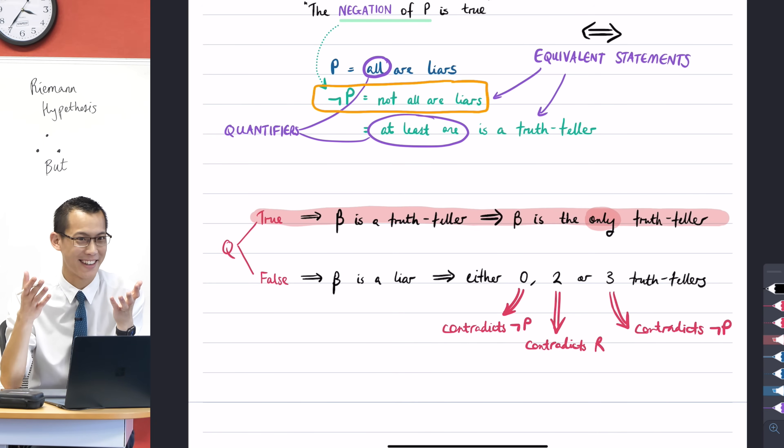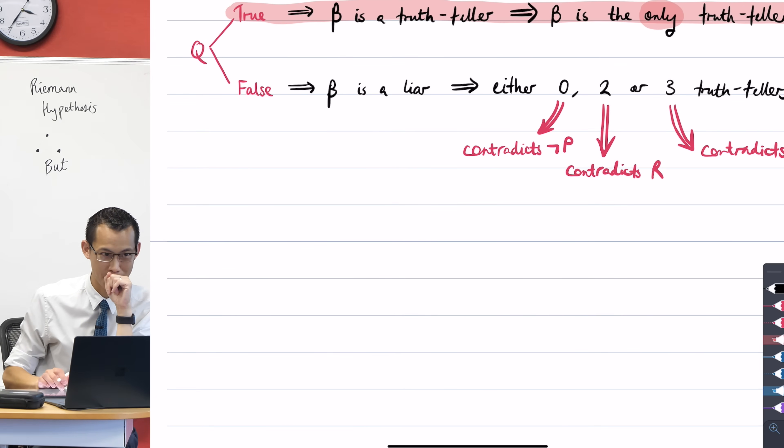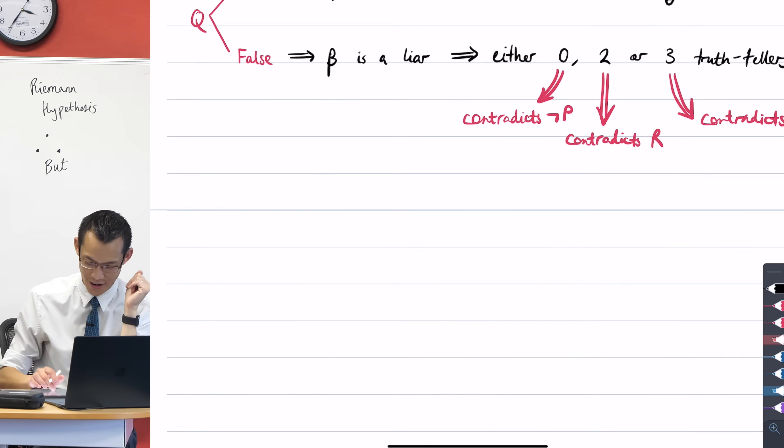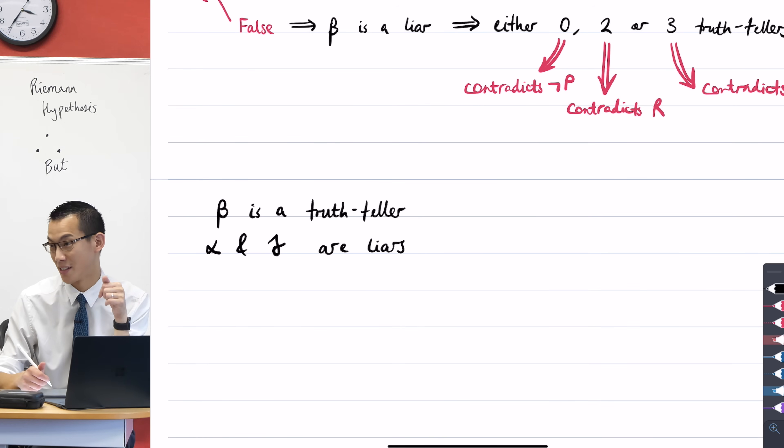Okay, are you ready to make a conclusion? Who's telling the truth? Only beta is telling the truth. And, as we said before, I think Calvin mentioned it, that means alpha and gamma, they have to be liars, because beta was telling the truth when he said there was only one truth-teller. He's the only one. She's the only one. Whoever they are.